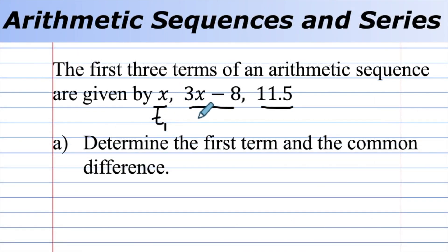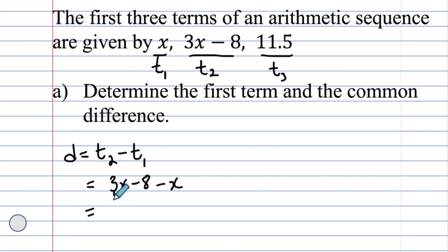x is t₁, 3x minus 8 is t₂, and 11.5 is t₃. We're asked to find the first term and the common difference. If you think about what common difference is, it's the second term minus the first term. We have 3x minus 8, subtract x. 3x minus x is 2x minus 8.